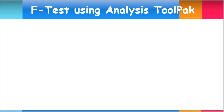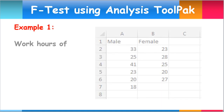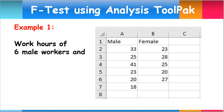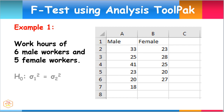For our specific example, we will use the data from work hours of six male workers and five female workers. The null hypothesis states that the variances of both are equal, while the alternate hypothesis says that the variances are not equal.